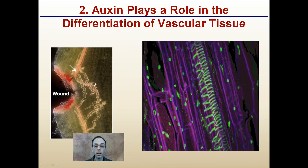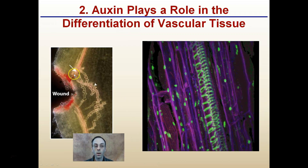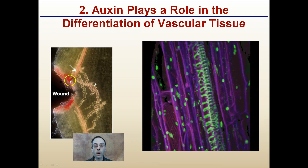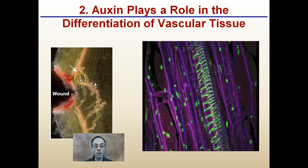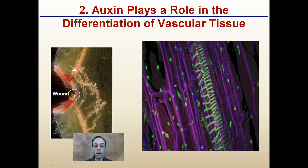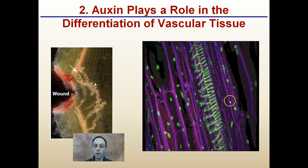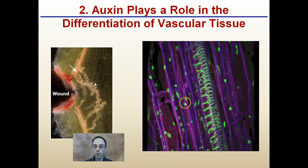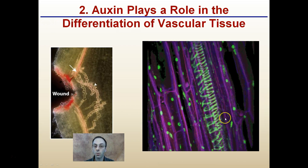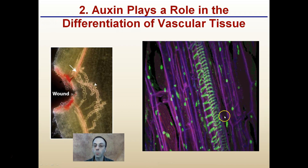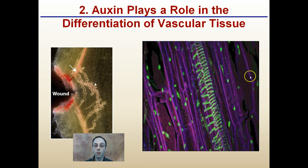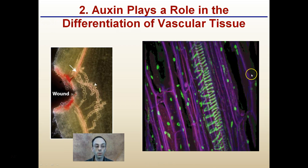Auxin plays a role in differentiation of vascular tissue. If there's a wound site, auxin will be involved to differentiate tissue to repair a vascular system. We see highlighted here the vascular system — the xylem and phloem — and auxin plays a role in cells differentiating into those particular vascular tissues.